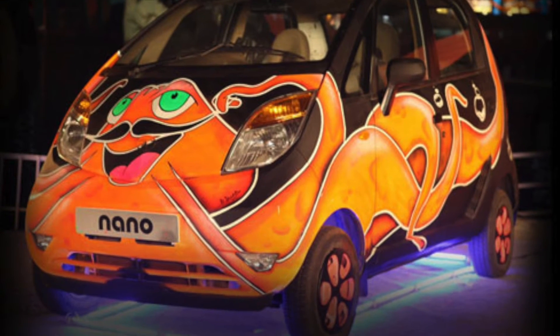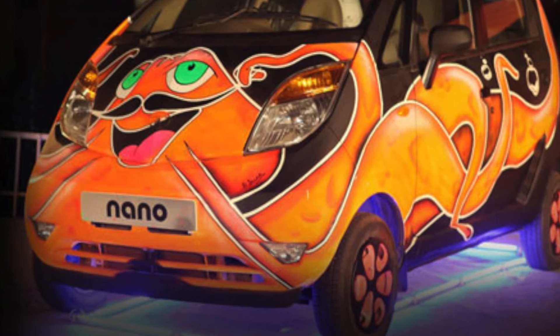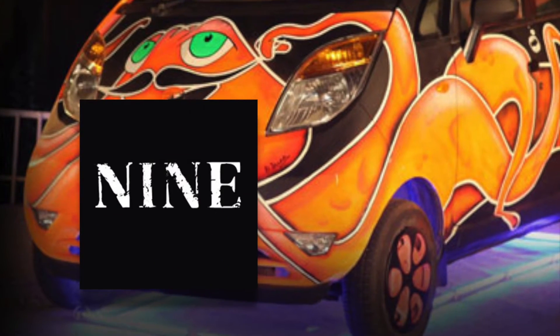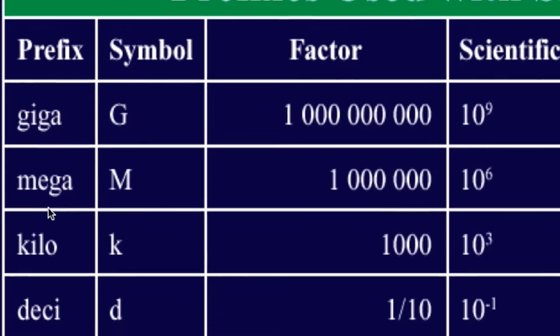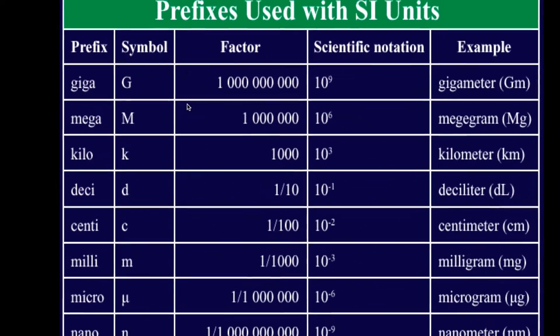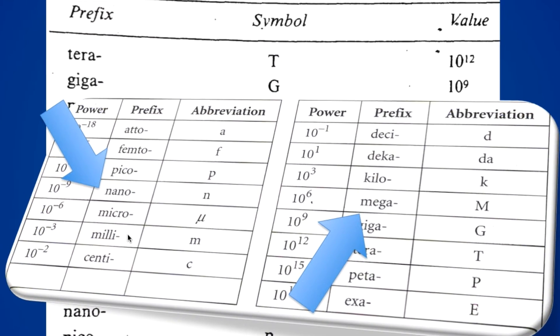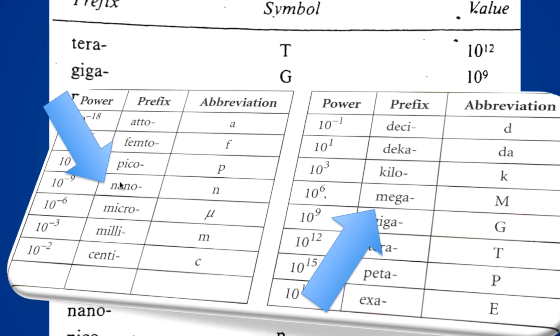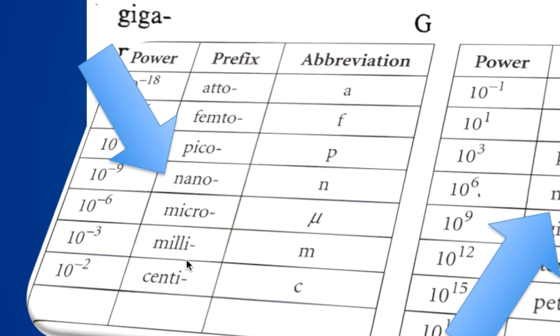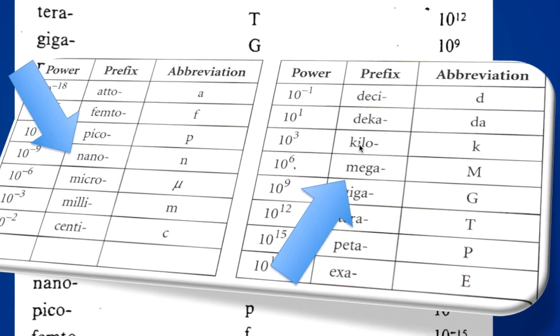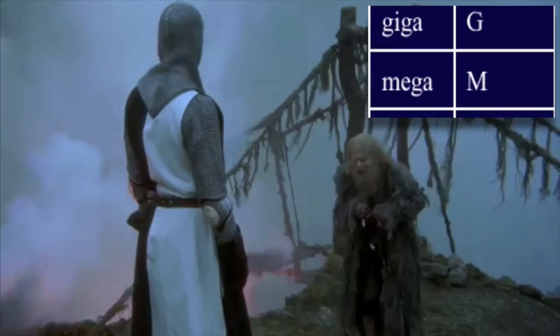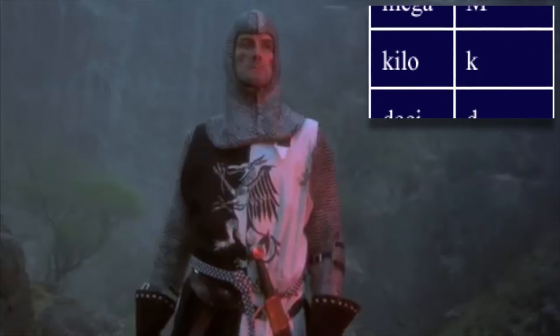There are several more metric prefixes, but for your basic purposes you just need to memorize the ones we've just covered. And to review those in reverse order, they are nano, micro, milli, centi, kilo, and mega. Right, off you go. Oh thank you, thank you very much, that's easy.